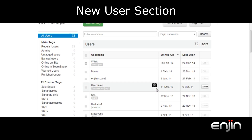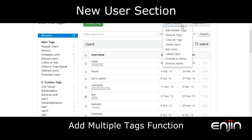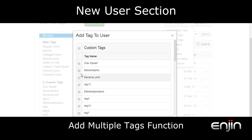Another new feature which we think you'll find really useful is the ability to assign users multiple tags at the same time. To do this, check the user in question and then hit the bulk actions drop down menu. From the menu you'll want to select the first option, add multiple tags. You'll then see a box with a list of all the custom tags on your website. Choose the tags you want and then hit add tags at the bottom.